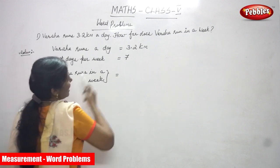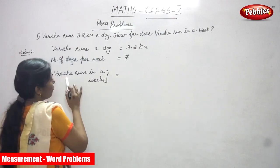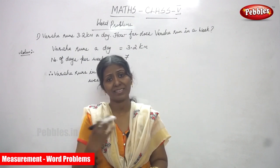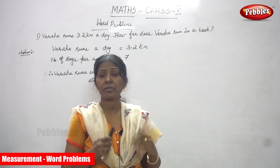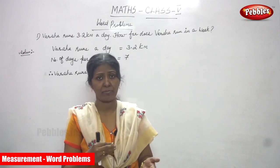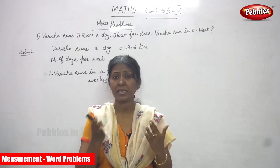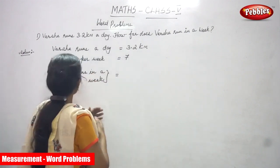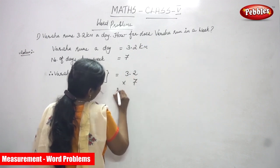The question is: how far does Varsha run in a week? Therefore, we need to find how many km she runs in 7 days. This means we use multiplication, because only one day's measurement is given — one day's length is given but they are asking for 7 days. So we calculate 3.2 multiplied by 7.